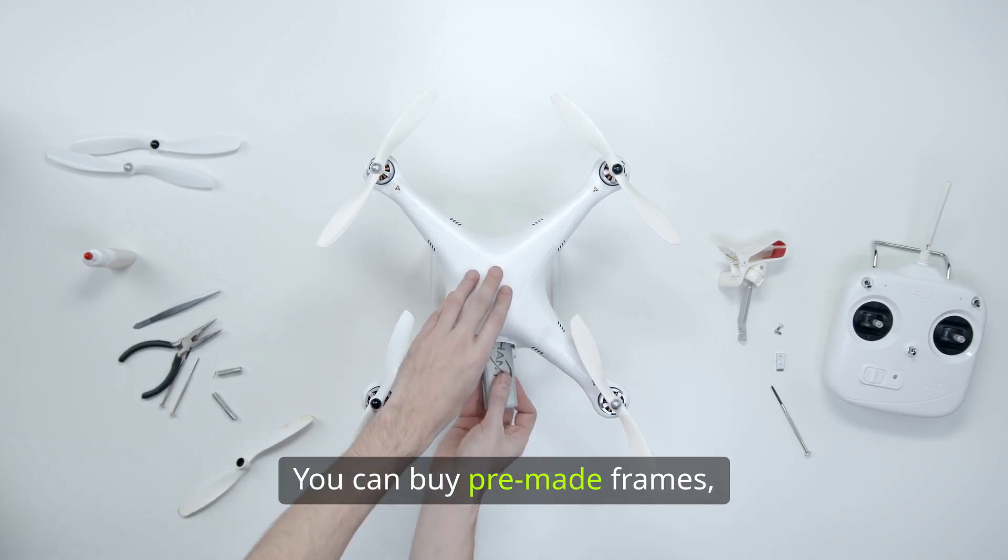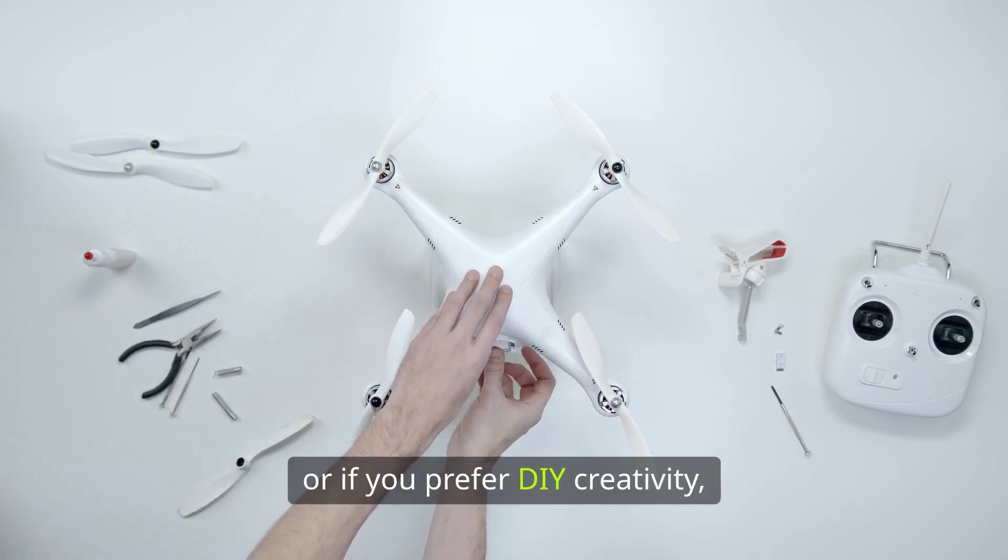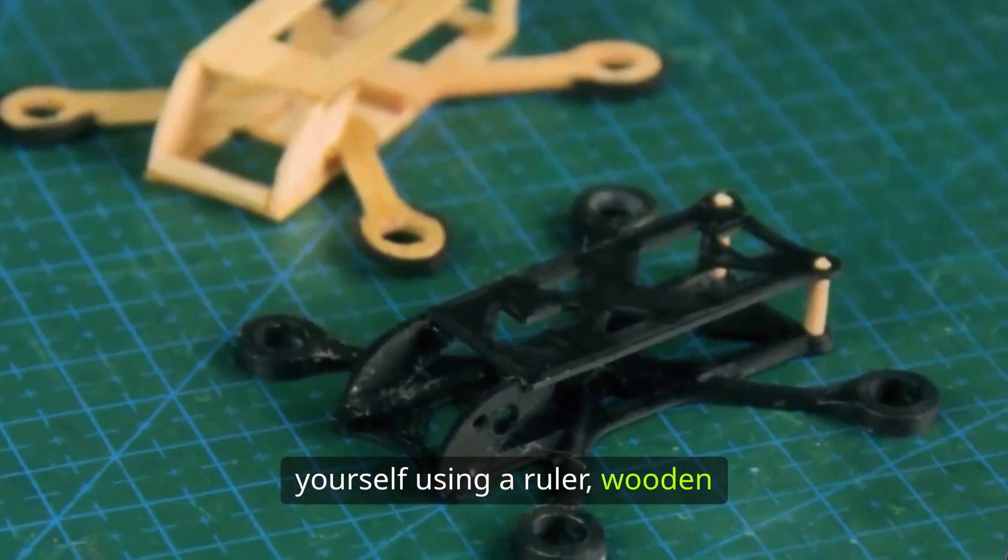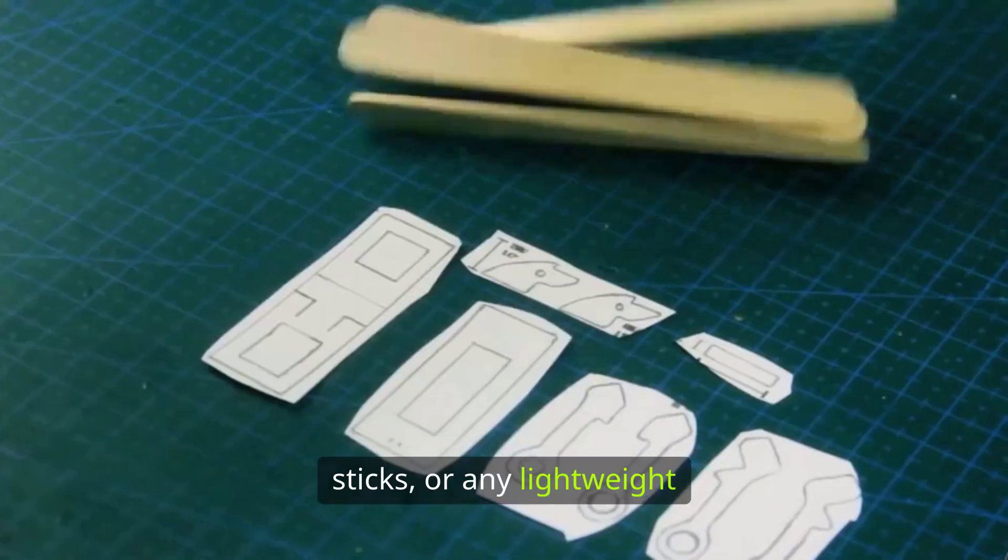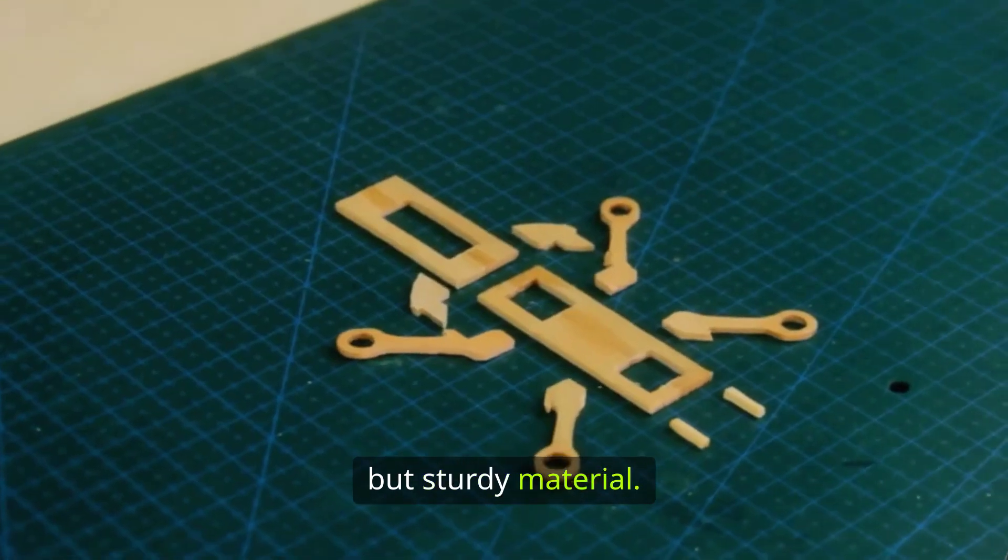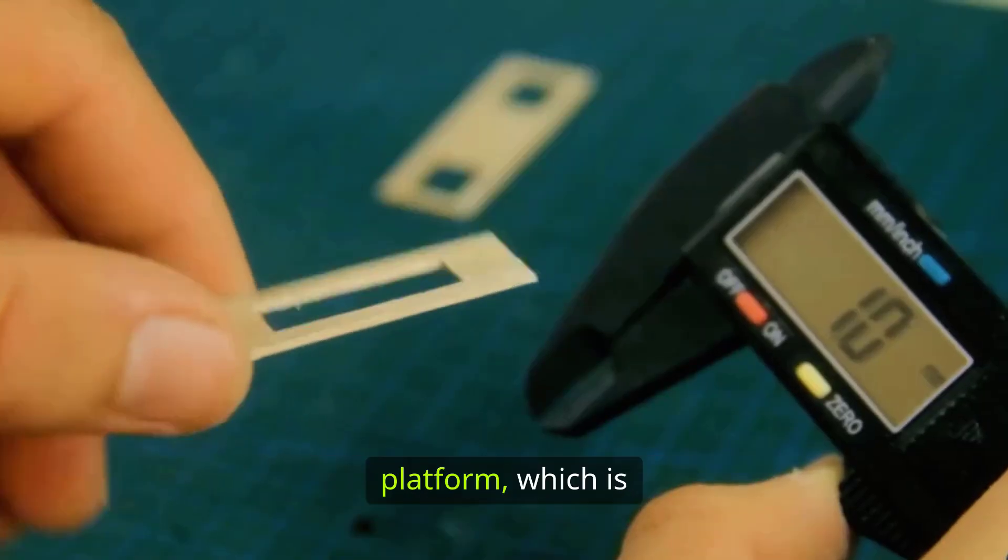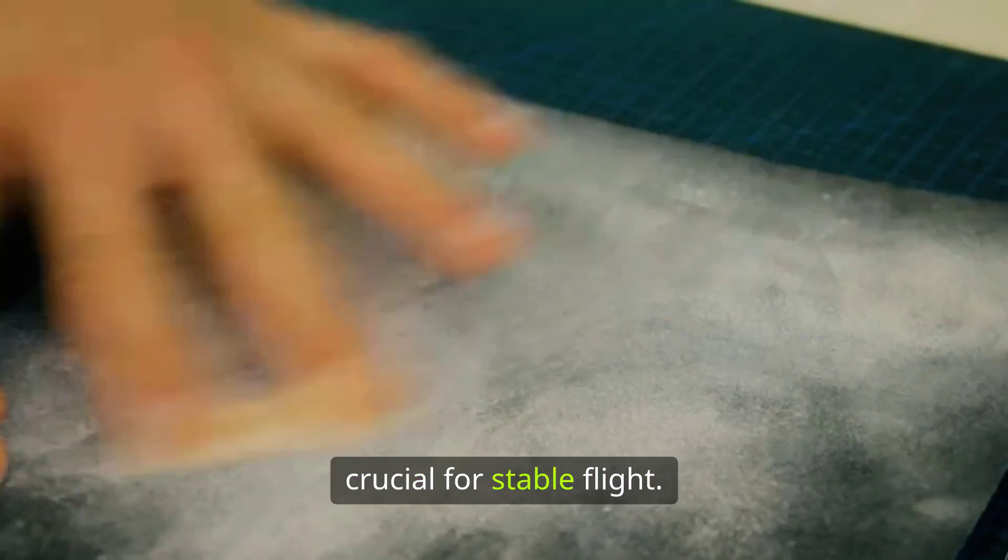You can buy pre-made frames, or if you prefer DIY creativity, you can make one yourself using a ruler, wooden sticks, or any lightweight but sturdy material. The goal is to create a solid, balanced, and symmetrical platform, which is crucial for stable flight.